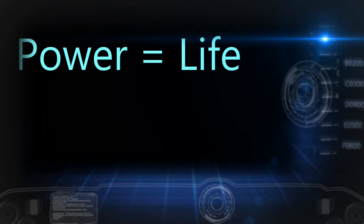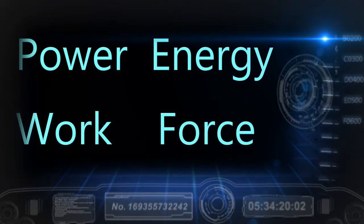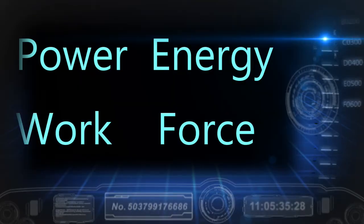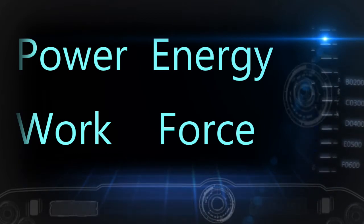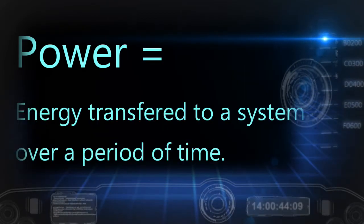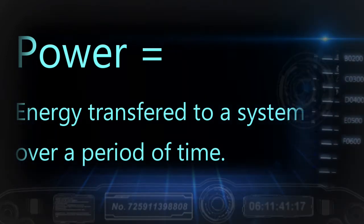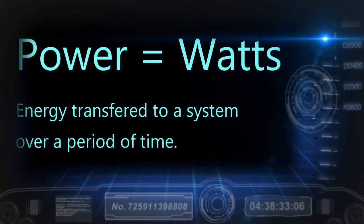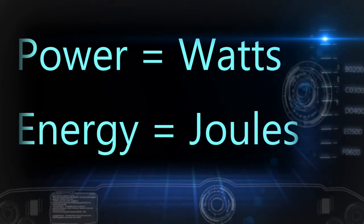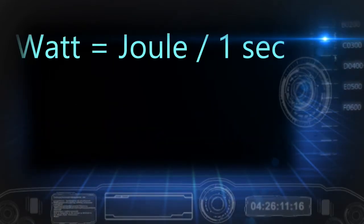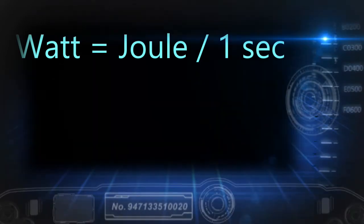First, let's make sure that we are on the same page when we talk about power. We will define power, energy, work, and force, then apply our understanding to a power generation system. Power is the amount of energy transferred over a period of time; the unit of power is the watt. The unit of energy is the joule. One joule of energy transferred over one second is a watt, which is also defined as kilogram meter squared over seconds cubed.